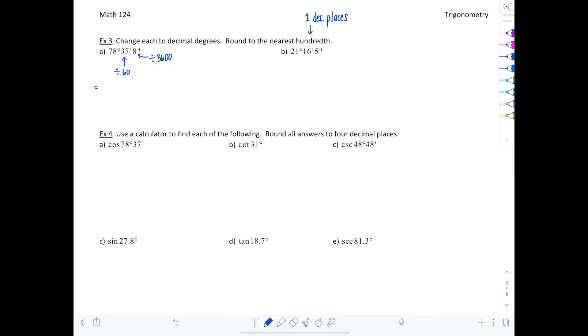Get your calculators ready. This is going to be equal to 78 degrees plus 37 over 60 degrees plus 8 over 3600 degrees. In your calculator, if it's a scientific calculator that can understand order of operations, you should be able to just punch in 78 plus 37 divided by 60 plus 8 divided by 3600. Then round your answer to two decimal places since the directions told us to round to the nearest hundredth. You should end up with 78.62 degrees.